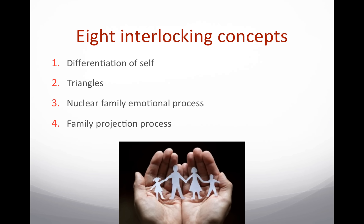Triangles refer to relationship formations. The three-person system is the most stable of the relationship makeups. A two-person dyad can become unstable fairly easily unless a third person is pulled in to relieve some of the anxiety. Bowen believed that in the three-person system, anxiety has more places to go and it's a much healthier type of relationship formation, and that all systems are made up of interlocking triangles.